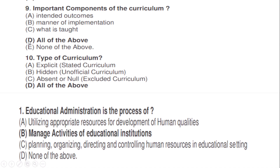Types of curriculum: correct option D — all of the above, meaning A, B, and C: (a) explicit or stated curriculum, (b) hidden or unofficial curriculum, and (c) absent or null — the excluded curriculum.